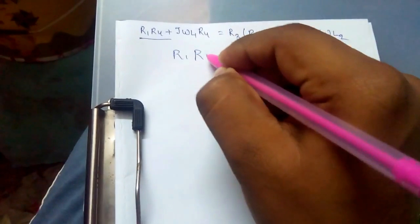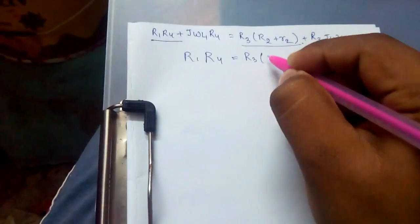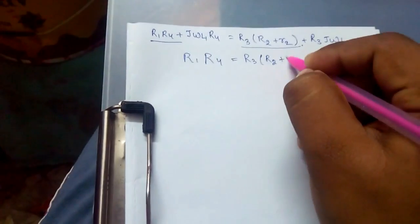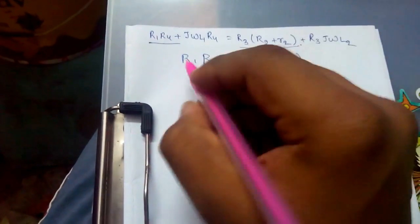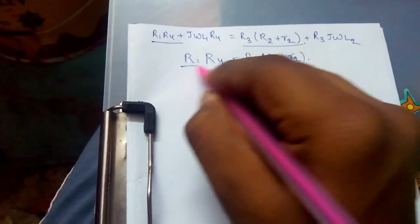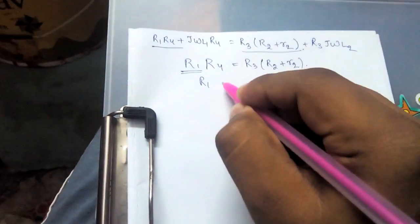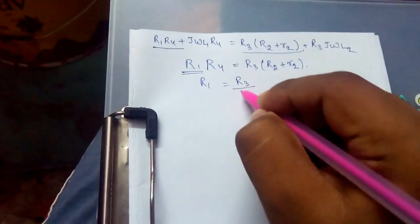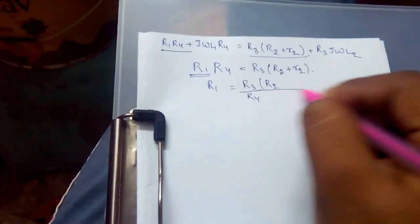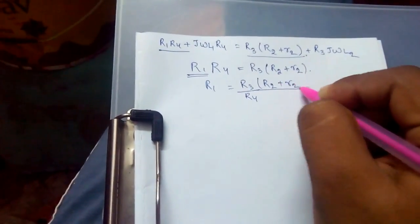We would get R1 times R4 equals R3 times R2 plus small r2. From which we can get the unknown resistance R1, that is R1 equals R3 by R4 into R2 plus small r2.